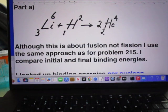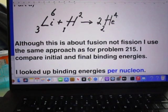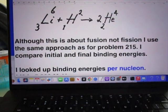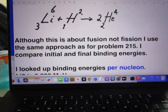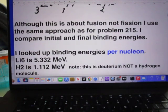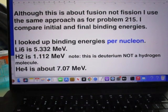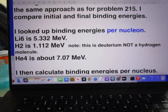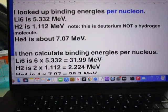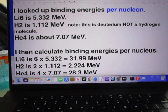So here you see a fusion reaction. Lithium plus deuterium gives two nuclei of helium-4. Although this is about fusion, not fission, I, and I mean Keith because he wrote this, use the same approach as for problem 215. I compare initial and final binding energies. I looked up the binding energies per nucleon for lithium-6, for deuterium, and for helium-4.